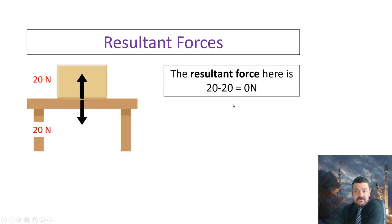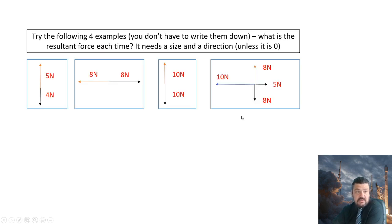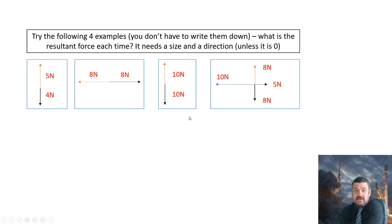So the resultant force here is zero: we've got 20 Newtons of force going down and 20 Newtons of force going up, so 20 minus 20 is zero — nothing is going to happen. Now try the following four examples in your heads. What is the resultant force each time? Remember force is a vector quantity, so it will need a size and a direction unless it is zero. This is a zero resultant force.